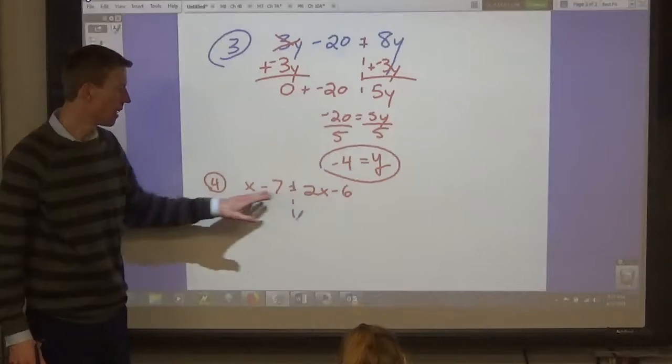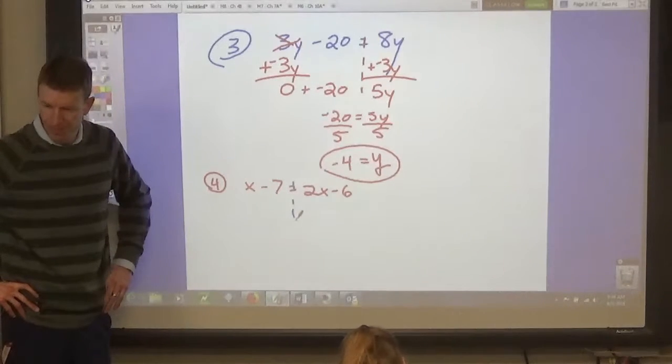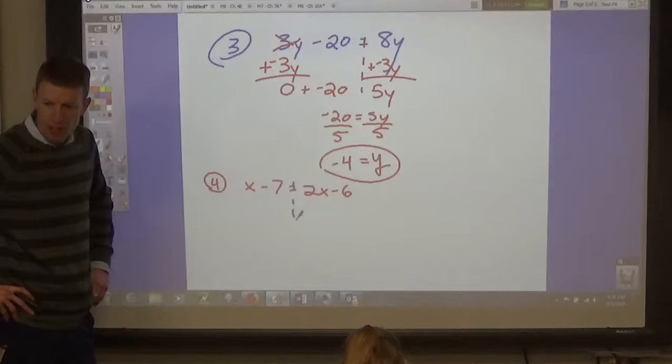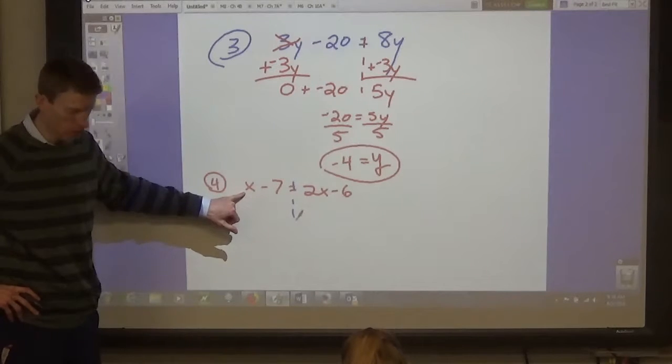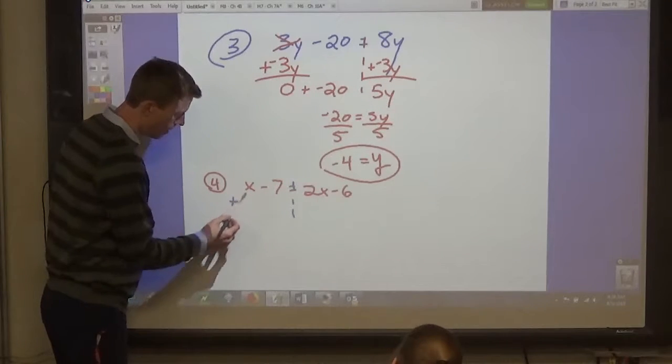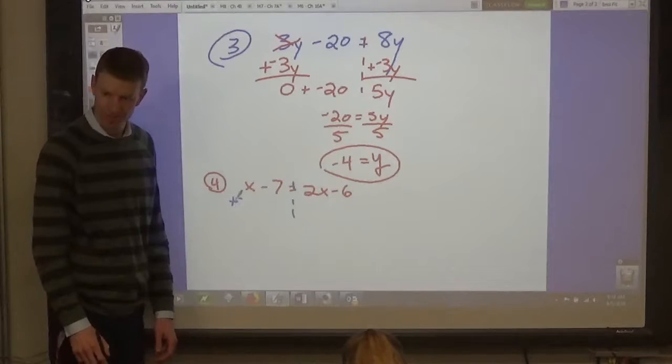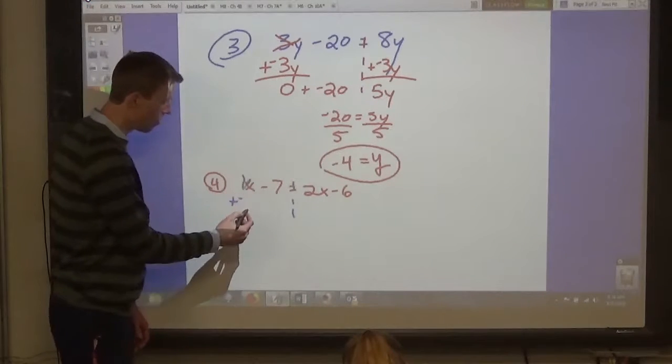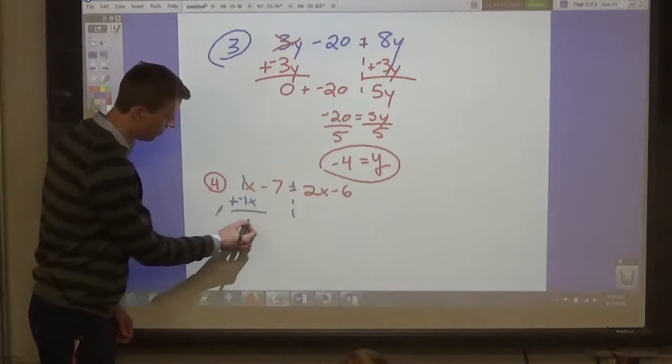So, we have x terms on both sides, and we have numbers on both sides. How do you want to start this, Andrew? So, you have to decide, what do you want to get rid of on the left side? Do you want to get rid of the x's on the left side? Yes. Good. Okay. How do we do that? Add? Yes, I mean, yeah. Add it by the negative number of x. Now, what would be in front of this x? A 1. A 1. So, we would add? Negative 1. Negative 1x. Very good.